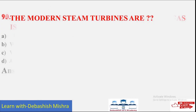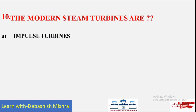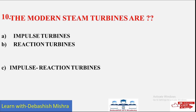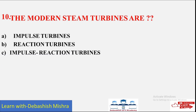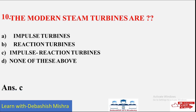Last question: The modern steam turbines are — options are: A) Impulse turbines; B) Reaction turbines; C) Impulse reaction turbines; D) None of these. The modern steam turbines are impulse reaction turbines. Answer C is the correct answer.